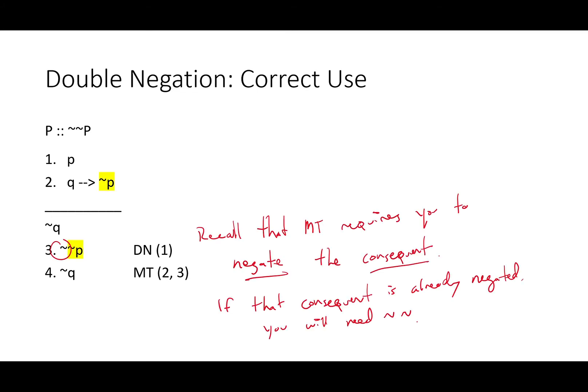Recall that modus tollens requires you to negate the consequent of your conditional. If that consequent is already negated, you're going to need two negation signs in front of another sentence letter. This is a classic case of needing double negation.